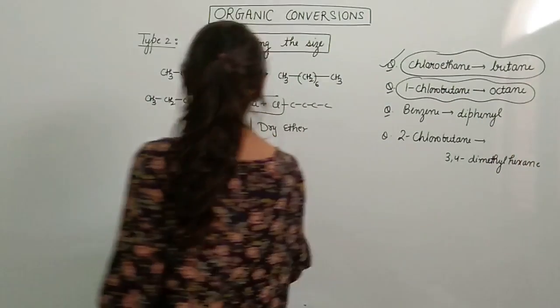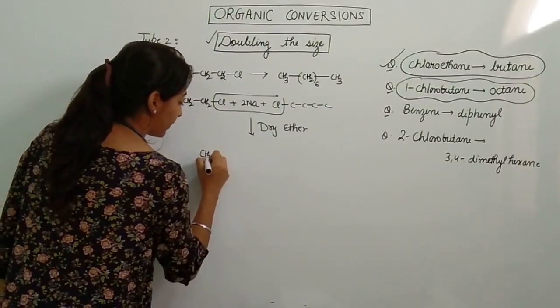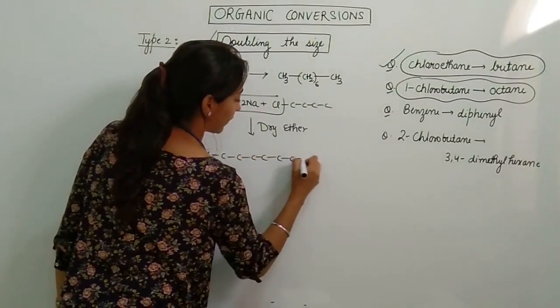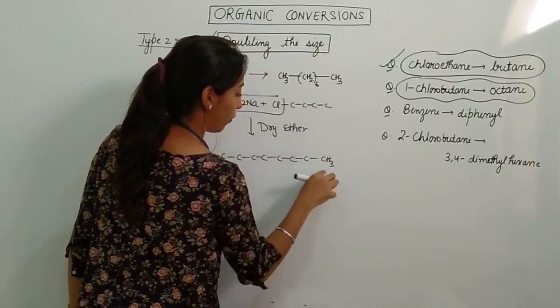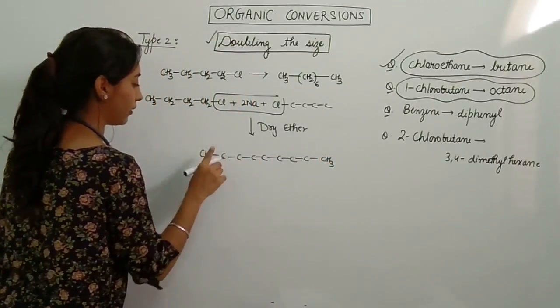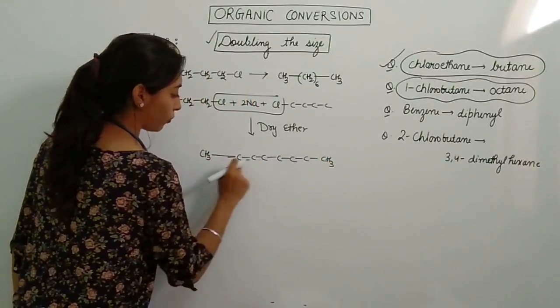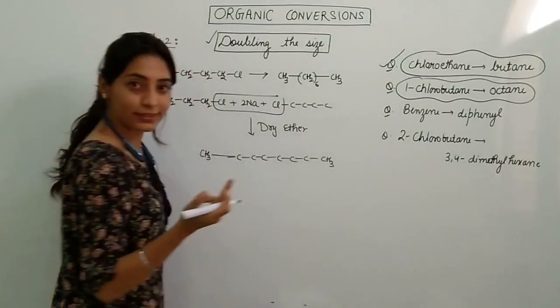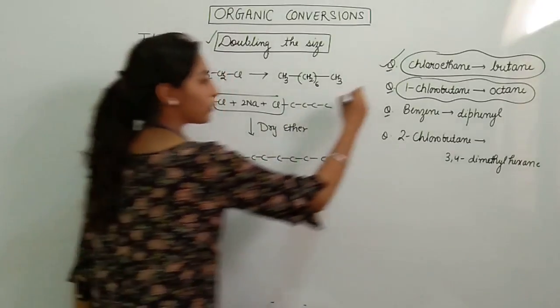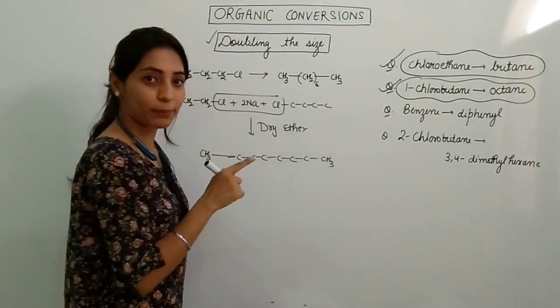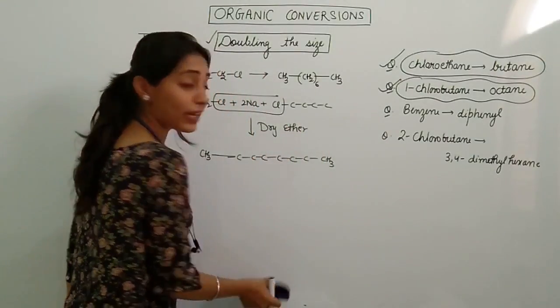Now with these two combined with each other, overall we get CH3, 1, 2, 3, 4, 5, 6, 7 and 8. Let me count: 1, 2, 3, 4, 5, 6, 7. That's it. n-octane. Understood? So this question also can be done with the same method. Let's move to another question.